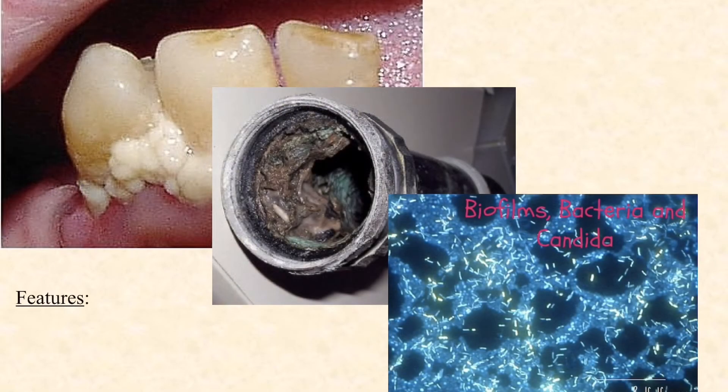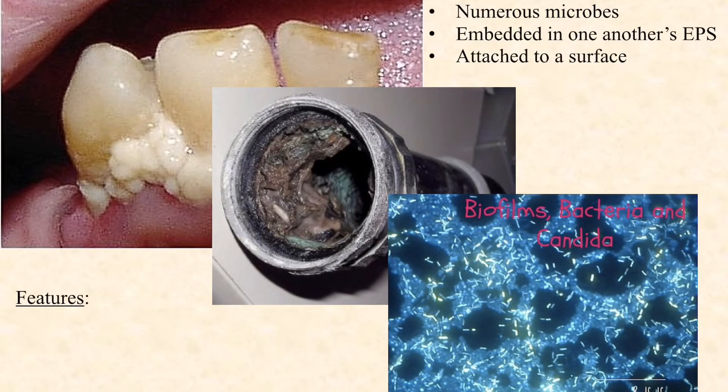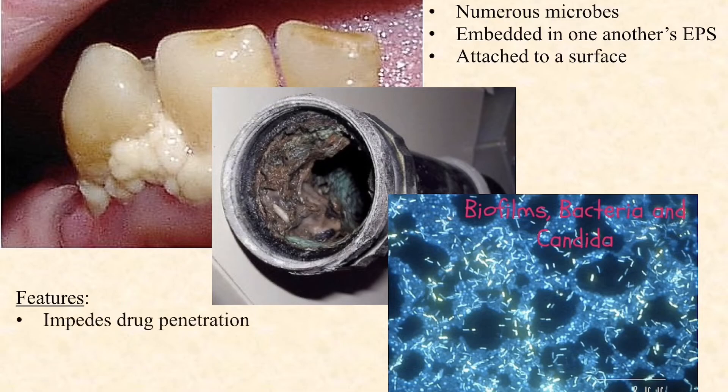So let's recap our definition of a biofilm. Numerous microbes — not just a single microbe — embedded in one another's EPS. In other words, all their capsules, slime layers, and glycocalyces are all sort of intermingled, like you see in the bottom right picture here, and attached to a surface. Those are the three key features of a biofilm in terms of its definition.